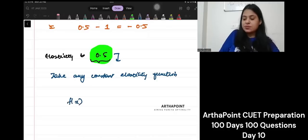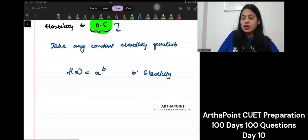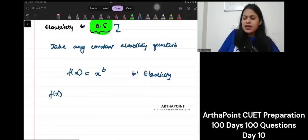Just say, for example, this. You have to remember this function. Function is fx is equal to x to the power b, where b is elasticity. Okay. What is fx by x? fx by x will be x to the power b by x. It will be x to the power b minus 1.